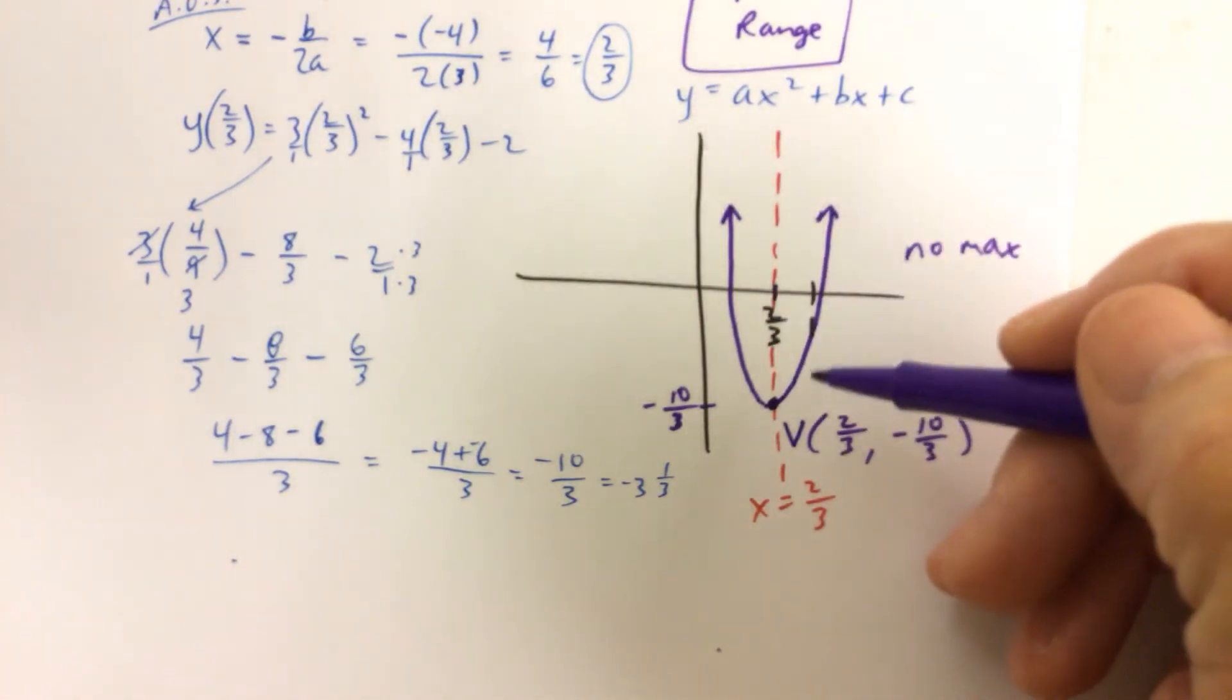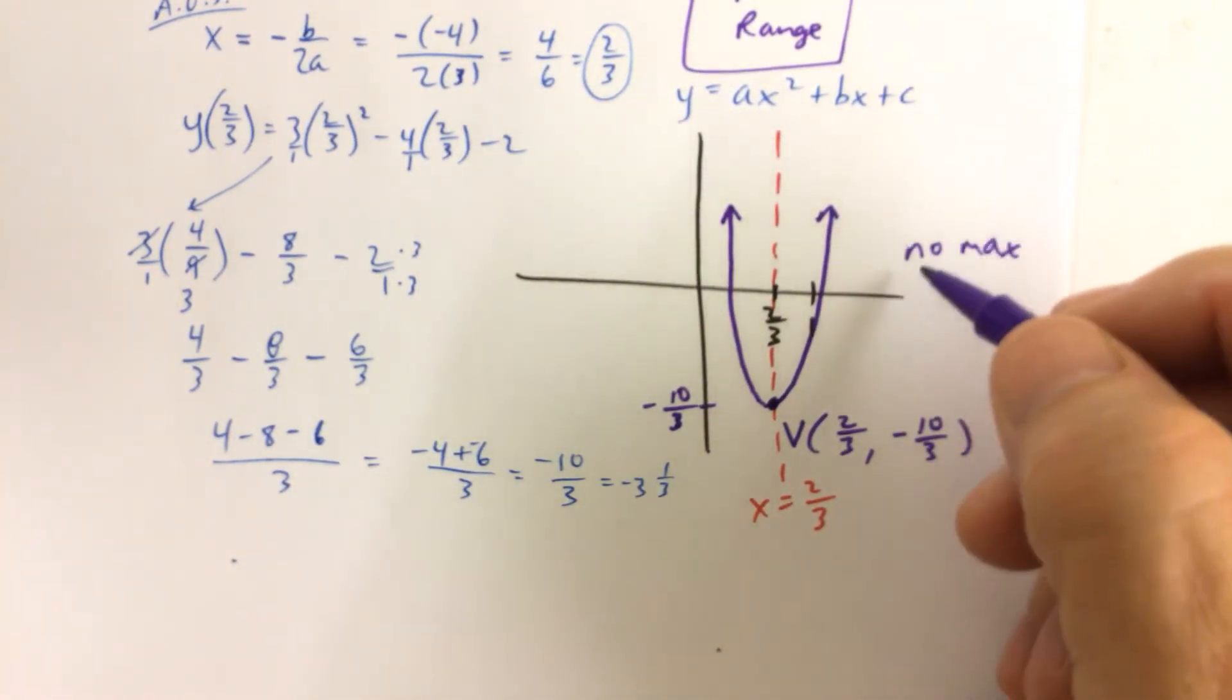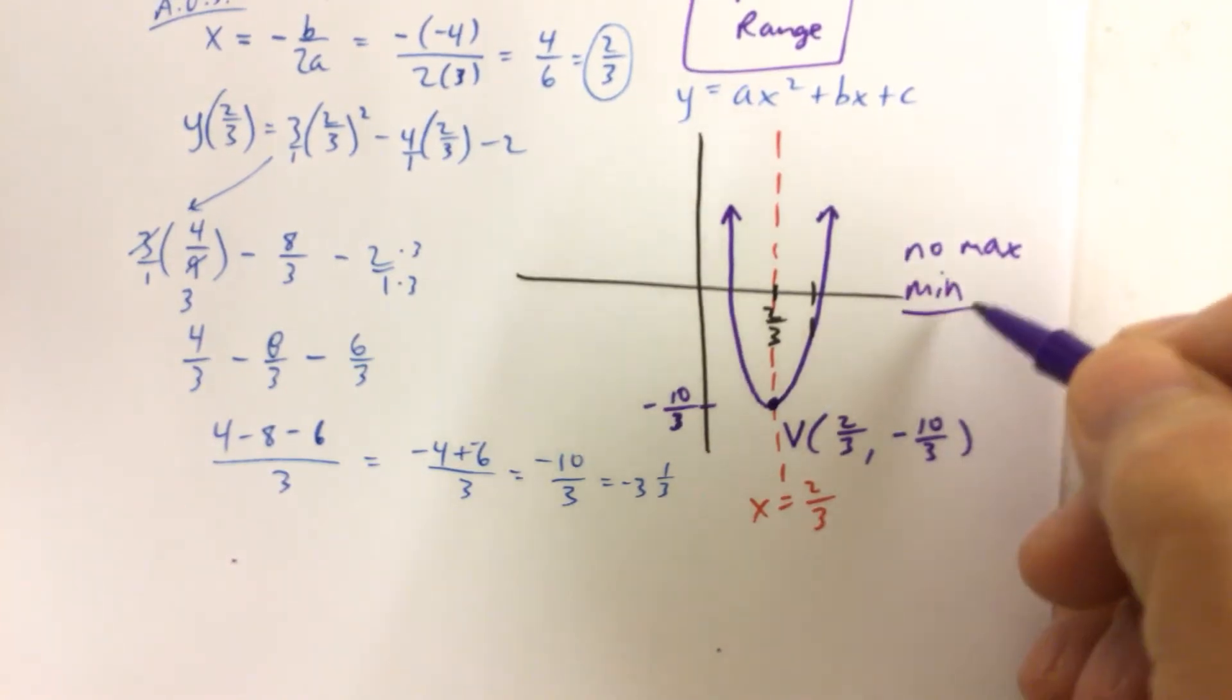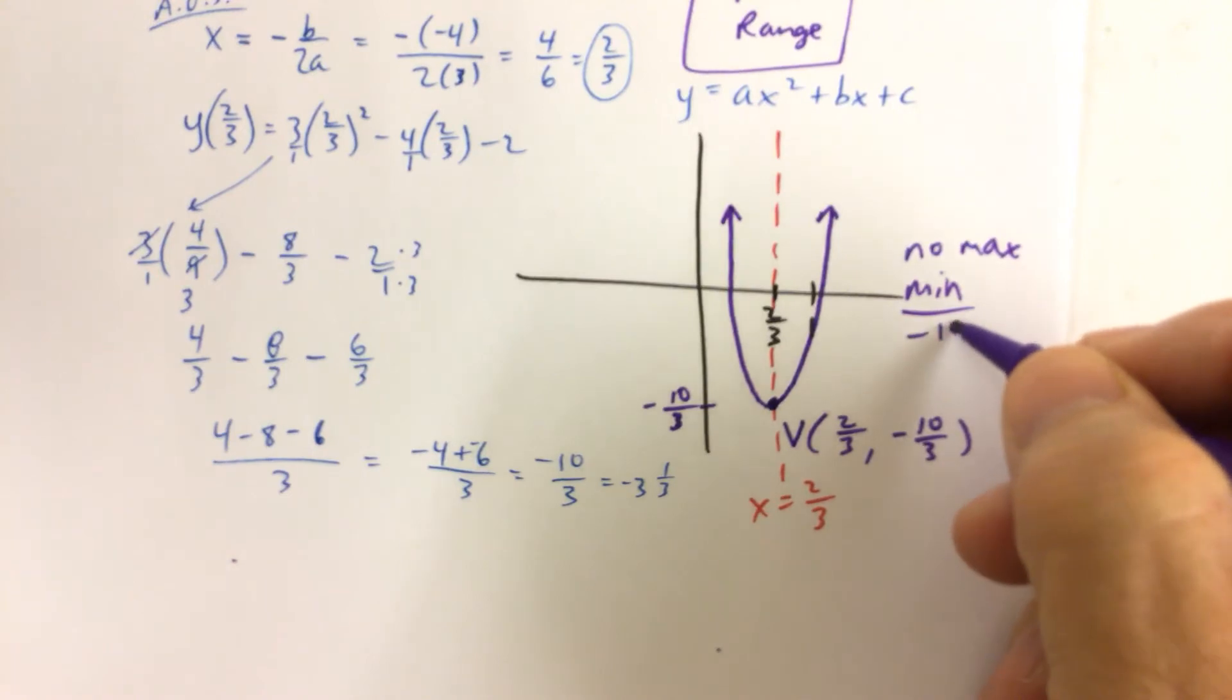Because the parabola keeps climbing. It goes up forever. There's no highest y value. But the min value, though, is the lowest y value, which is negative 10 thirds.